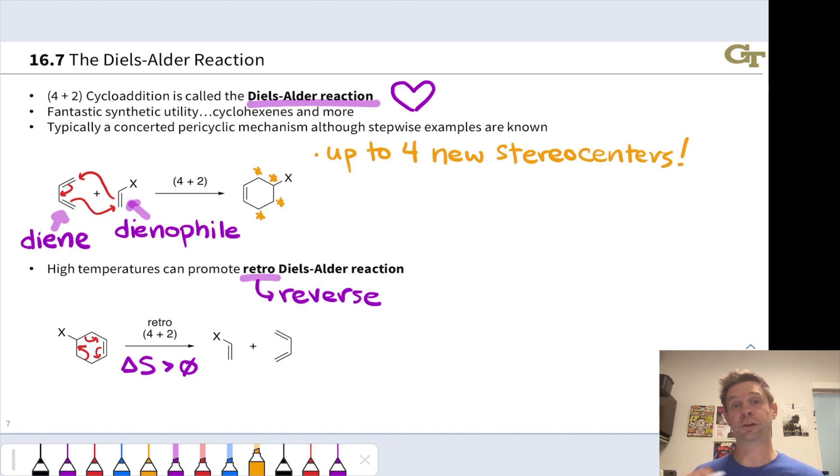We can build up a lot of molecular complexity in a very short time. One other thing to notice is that the Diels-Alder reaction can establish up to four new tetrahedral stereocenters at the two ends of the diene, there and there, and at the two carbons of the dienophile. That stereochemistry is predictable and actually follows relatively well-behaved rules, which is fantastic.